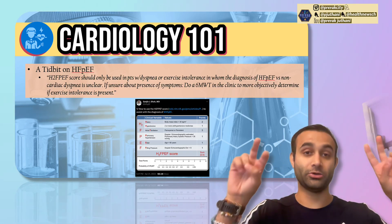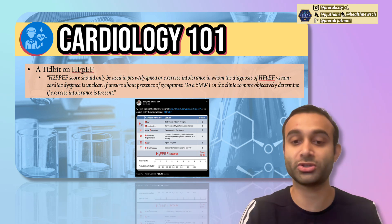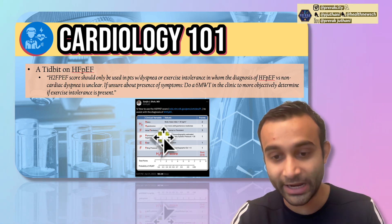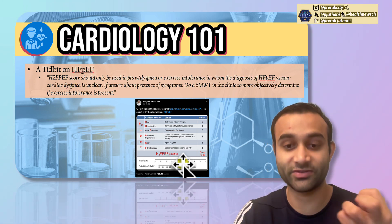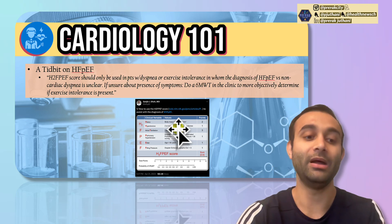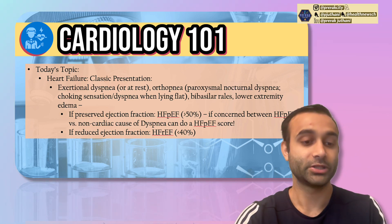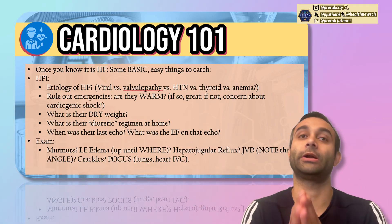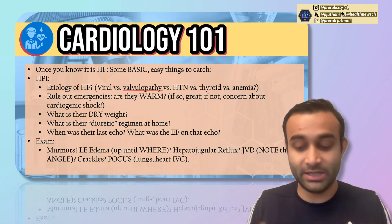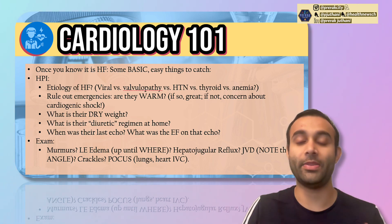Heart failure with preserved ejection fraction is diagnosed when a patient has signs and symptoms of heart failure, and we also refer to the H2FPEF score. Factors such as older age, underlying diastolic dysfunction, and atrial fibrillation can support that diagnosis. Heart failure with reduced ejection fraction is easier to diagnose — you just need a low EF and signs of heart failure. Once you've diagnosed heart failure, you want to think about why they have this exacerbation: Did they not take their medications? Did they have a viral infection or some other underlying trigger?